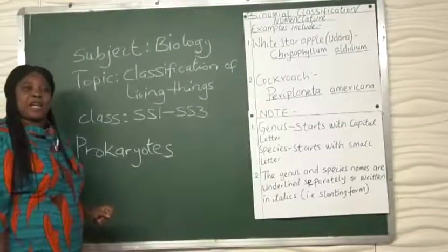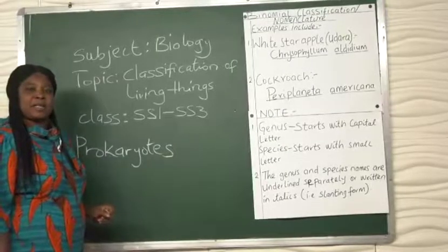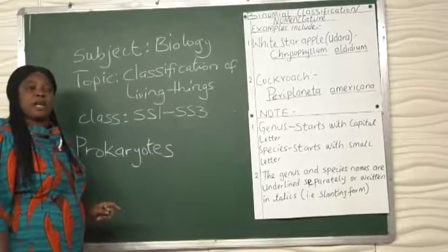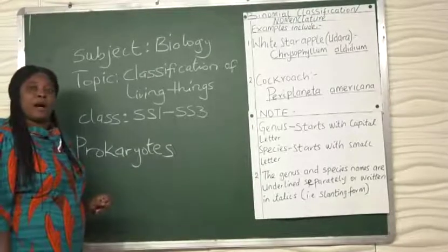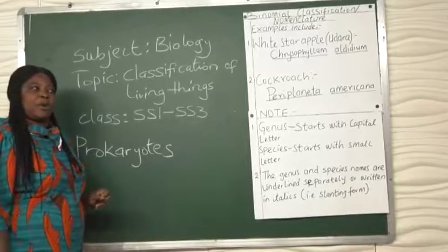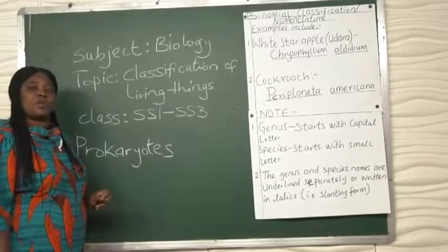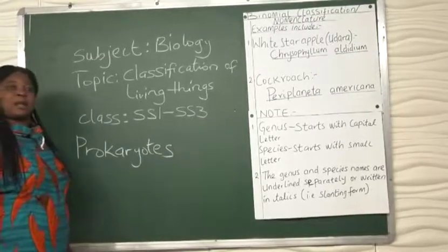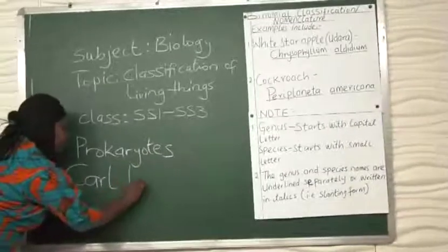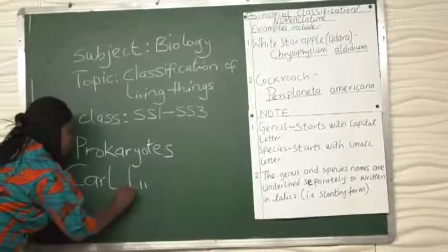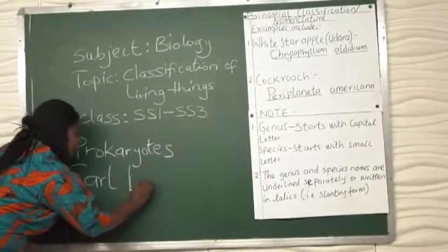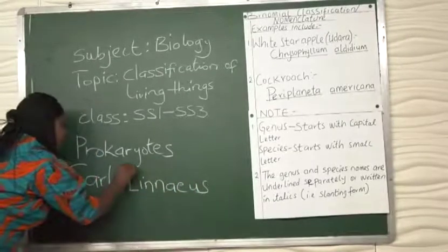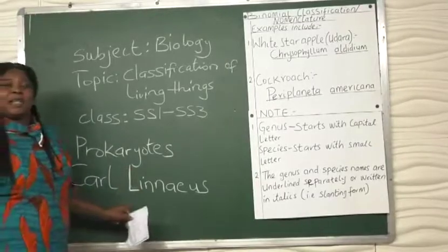We move further in our classification of organisms. The system used by scientists all over the world is one we call binomial nomenclature. Binomial nomenclature was introduced by a Swedish biologist named Carl Linnaeus.